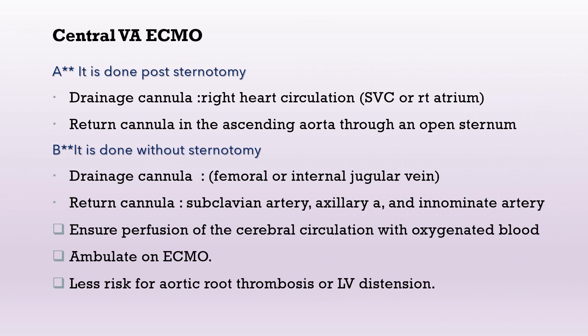The second type of VA ECMO is central VA ECMO. The classic form is done post-sternotomy and post-cardiopulmonary bypass, with the drainage cannula in the right heart circulation — superior vena cava or right atrium — and the return cannula in the ascending aorta through the sternal opening. Its main advantage is avoiding differential hypoxemia or north-south syndrome. A non-classic modified central type can be done without sternotomy, with the drainage cannula in the femoral vein or internal jugular vein, and the return cannula inserted through the subclavian, axillary, or innominate artery. This type ensures good cerebral perfusion with oxygenated blood, easier ambulation of the patient, and less risk of aortic root thrombosis or LV distension.